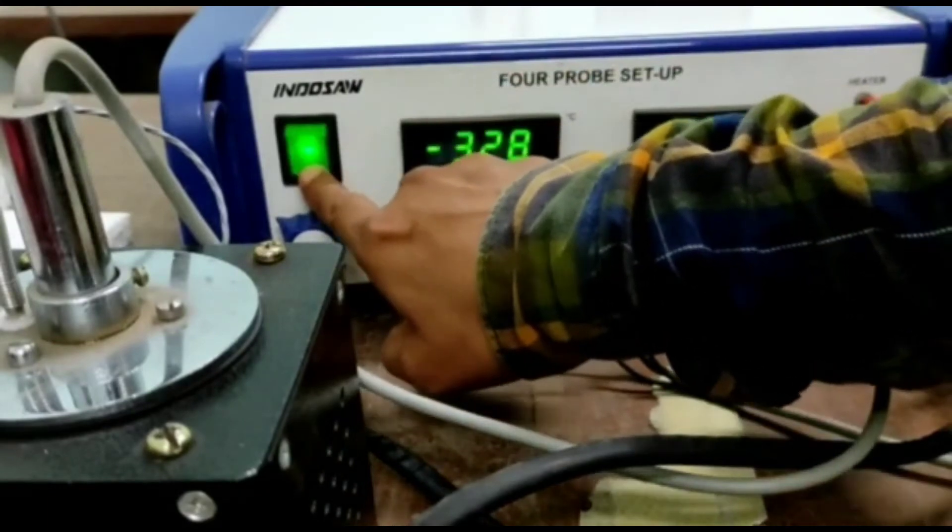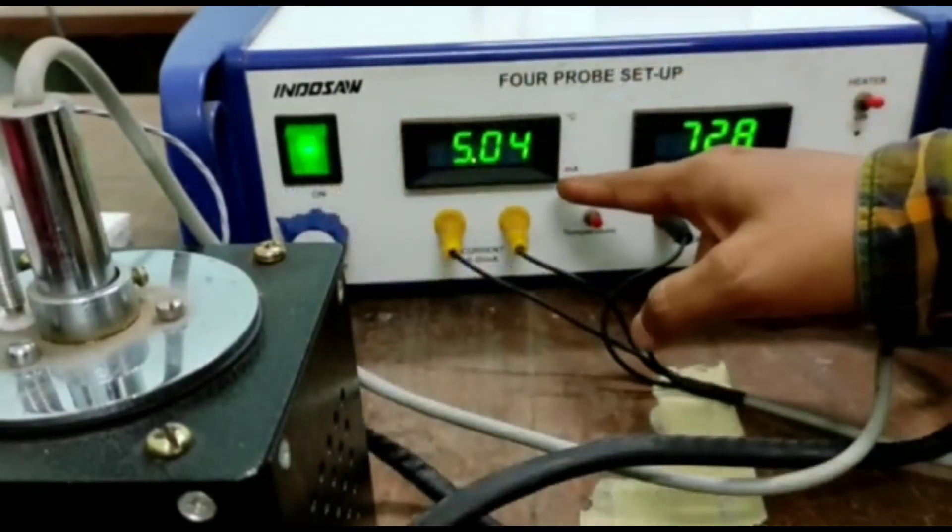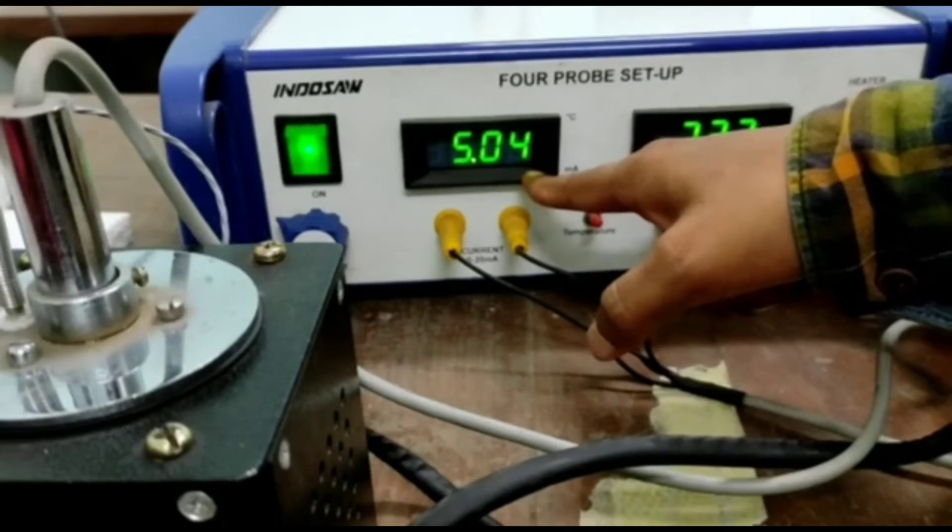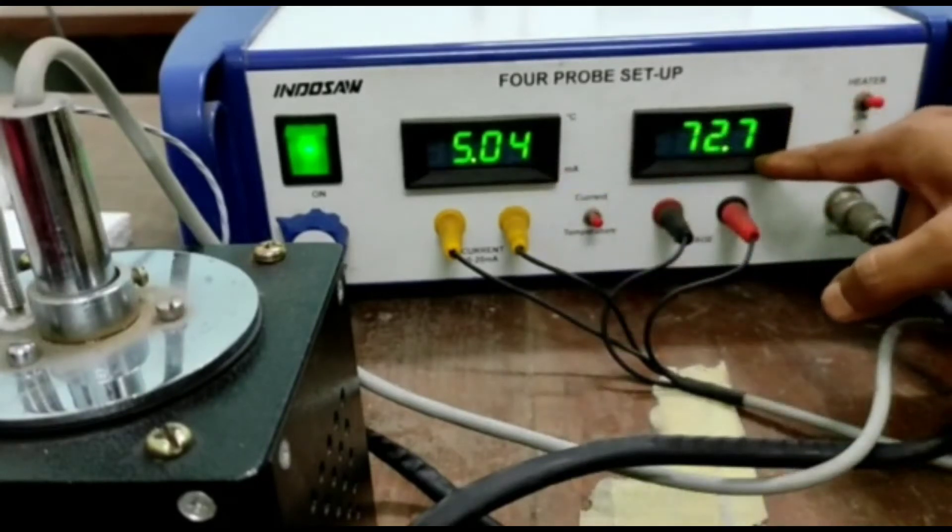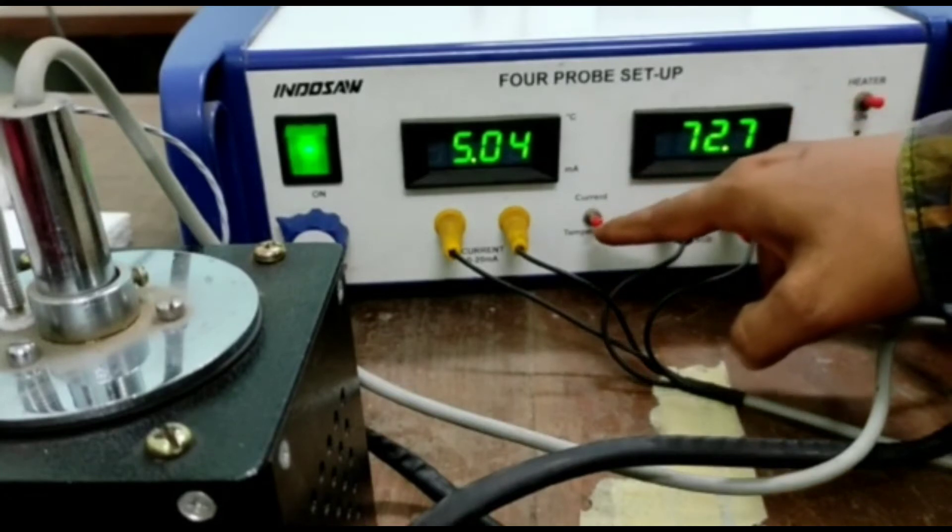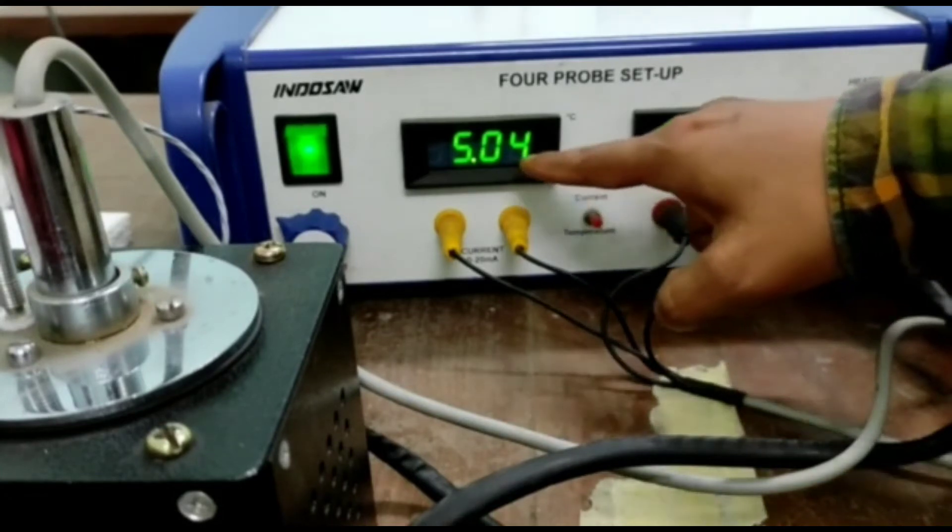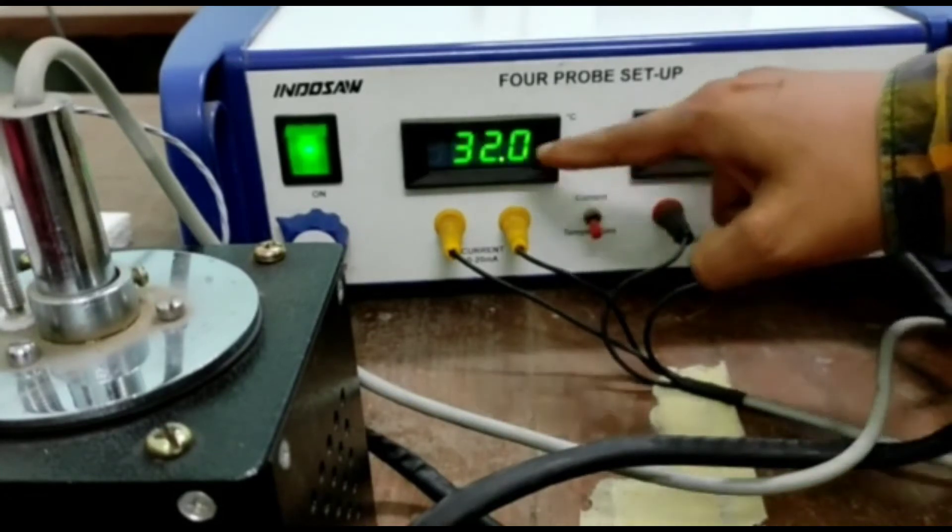When I put the power on, you can see this is your milliampere display and this is your millivolt display. At this position, it is at current mode, so it shows current. When I put it down, then it will show temperature.